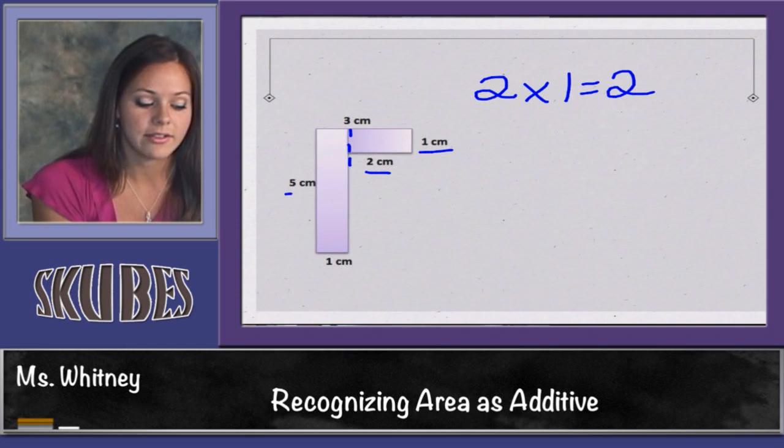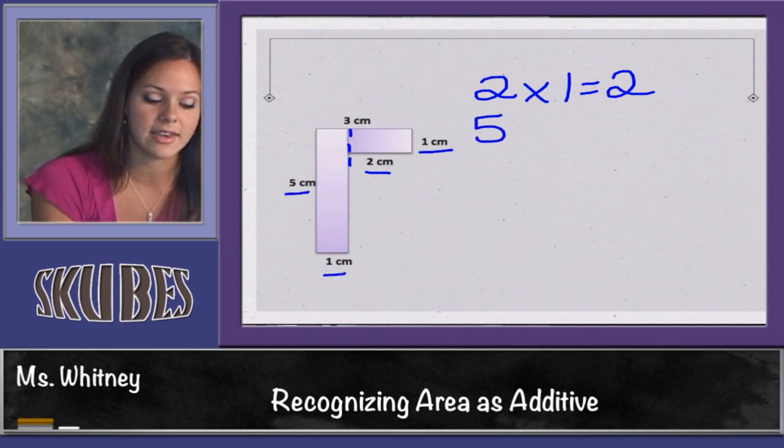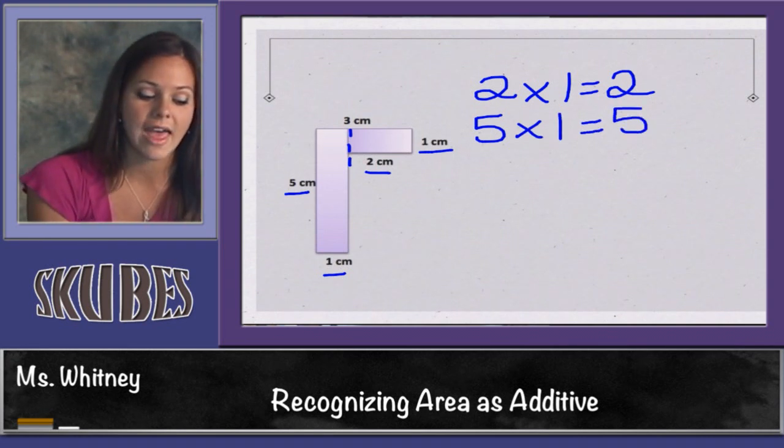Then I'll multiply 5 times 1 to find the next area. If I add 5 plus 2, I get 7 centimeters squared, square centimeters.